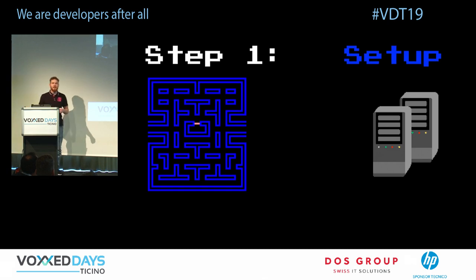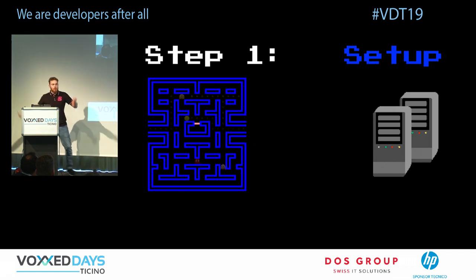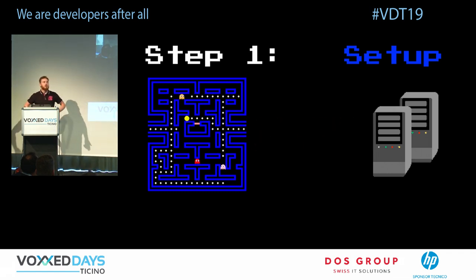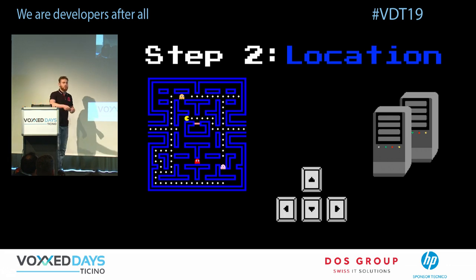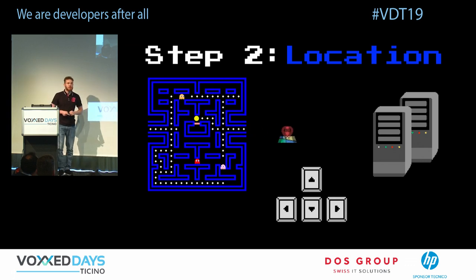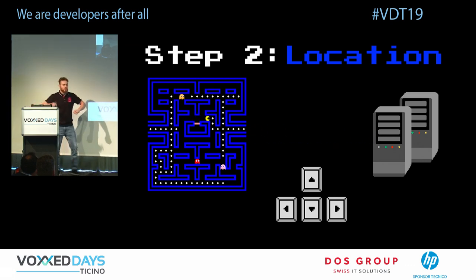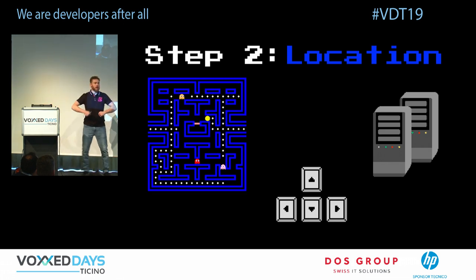The next step is an initial interaction — identifying who I am and receiving the game state so I can start playing. To make it interactive, I send my location updates to the server. This is a simple implementation: I'm moving and telling the server where I am — location updates from my client to the server.